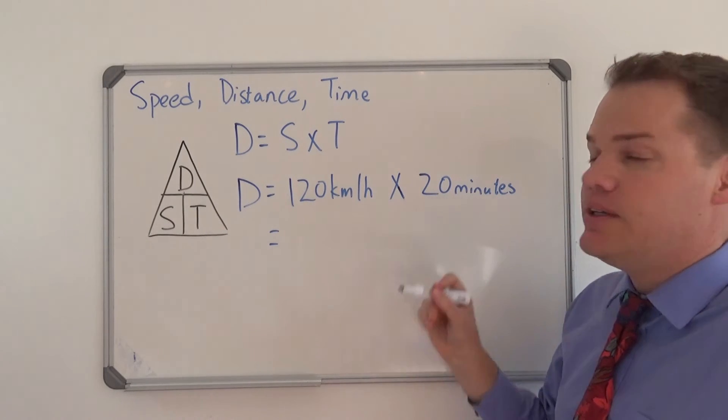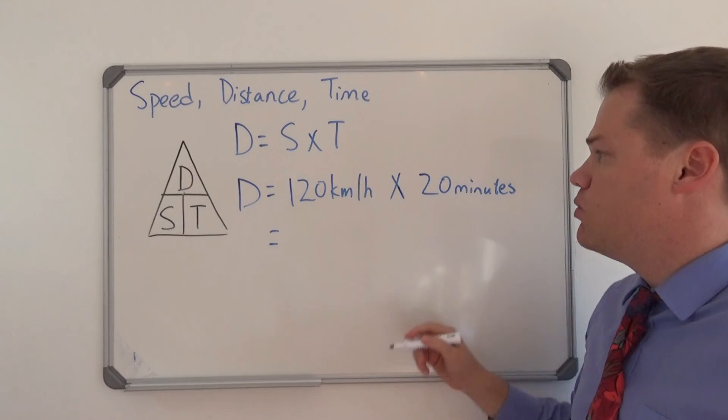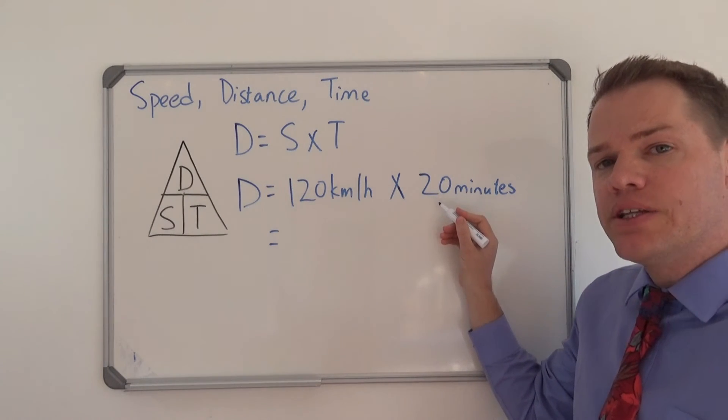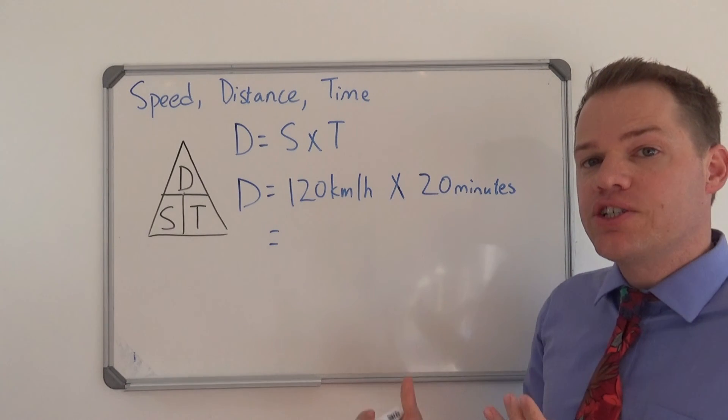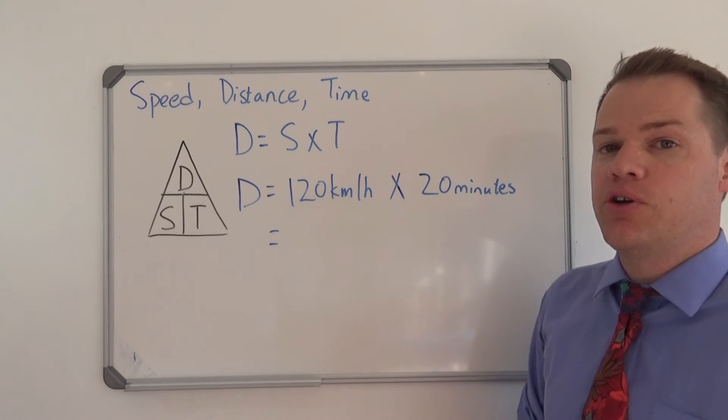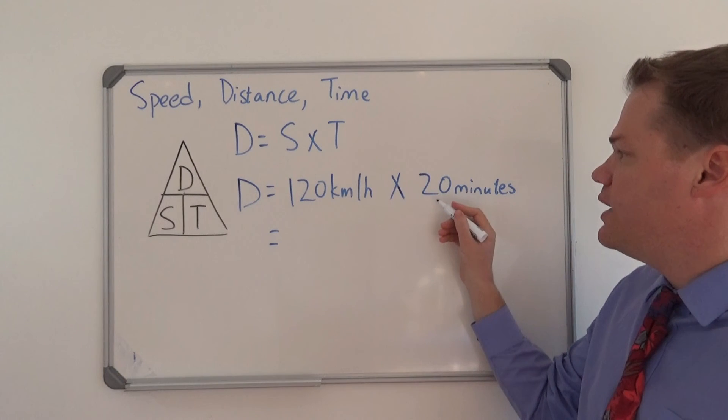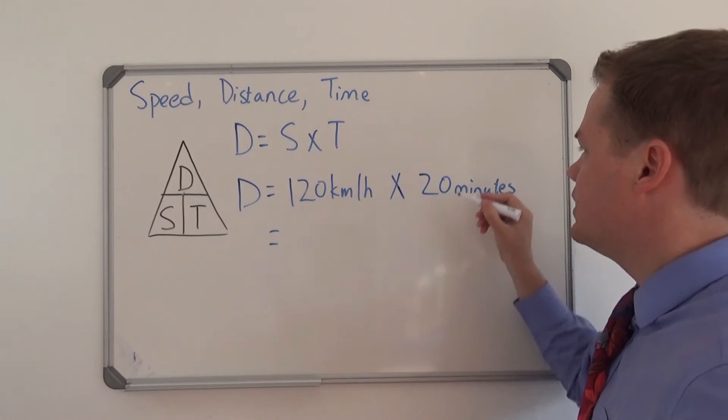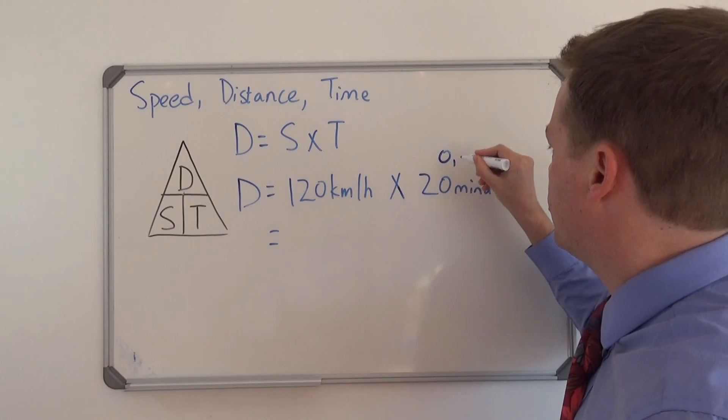So we have to convert 20 minutes to a fraction of an hour. And so how do we do that? We say 20 divided by 60 and this is your answer.